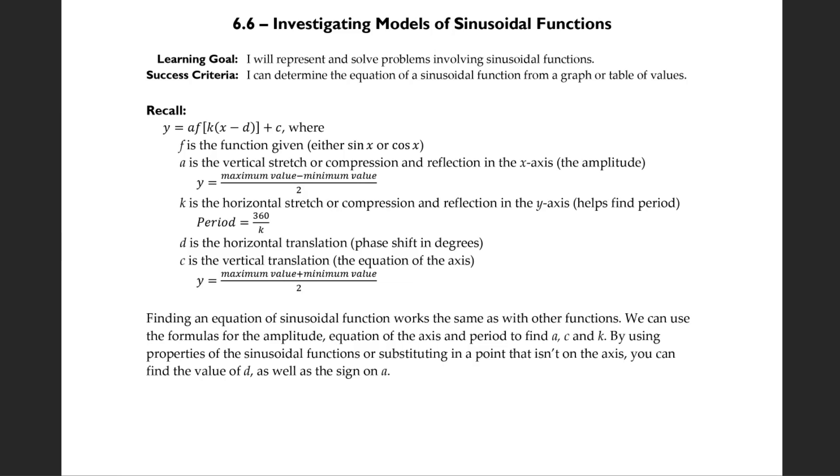To recall, y equals a times f of k times x minus d plus c. That's our base function with all the transformations. f is your function, in this case sine or cos x. a is the vertical stretch or compression or reflection in the x-axis, also the amplitude. Remember, how do you find the amplitude? Maximum value minus minimum value divided by 2.